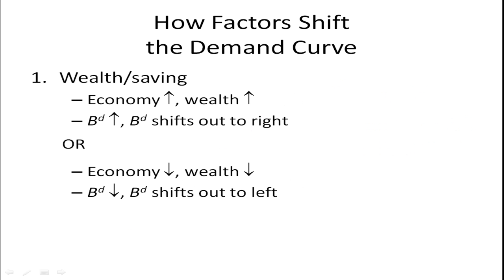Let's look at factors that shift the demand curve. One is wealth and savings. If the economy is doing well, wealth is up, the demand for bonds is up, and the demand curve shifts out to the right. If the economy is wealthier, people have more than enough money to meet their day-to-day necessities like food and housing. They will need to invest their money someplace. Some will invest in bonds, which increases the demand. When the economy is bad, people have not enough money to invest, there will be a reduction in the demand for bonds. The curve will shift back and to the left.